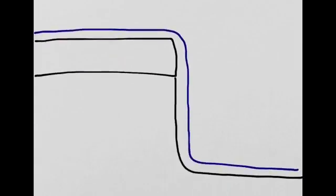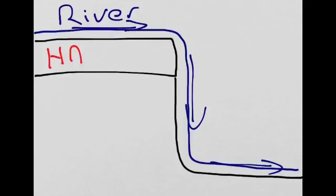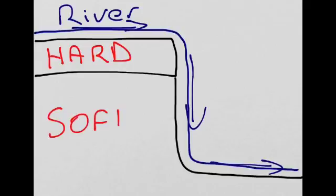I'm going to use a series of simple diagrams to help us understand how waterfalls are formed. The blue line represents a river which is flowing over in this direction, over a steep drop, and continues on downstream. The area here represents a band of hard rock which is capping on top of a band of soft rock underneath.